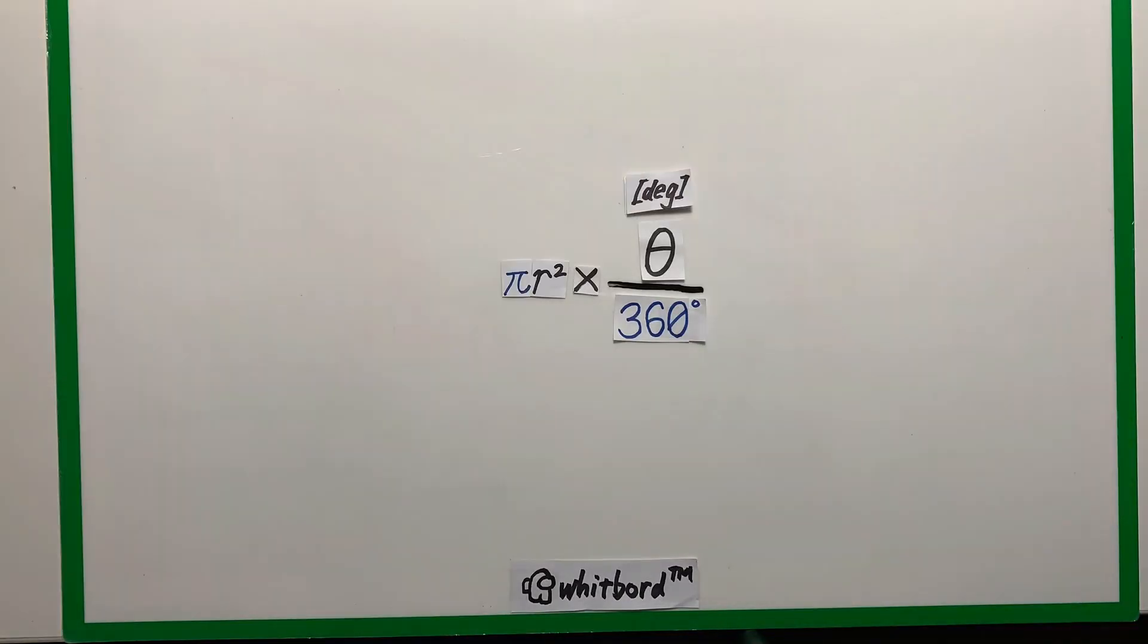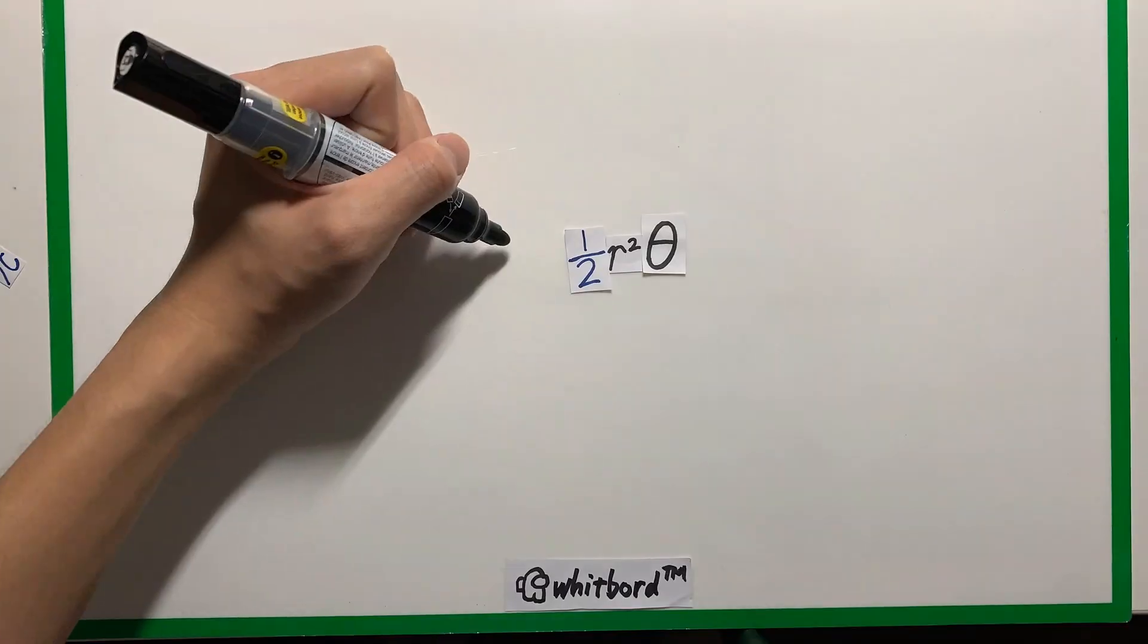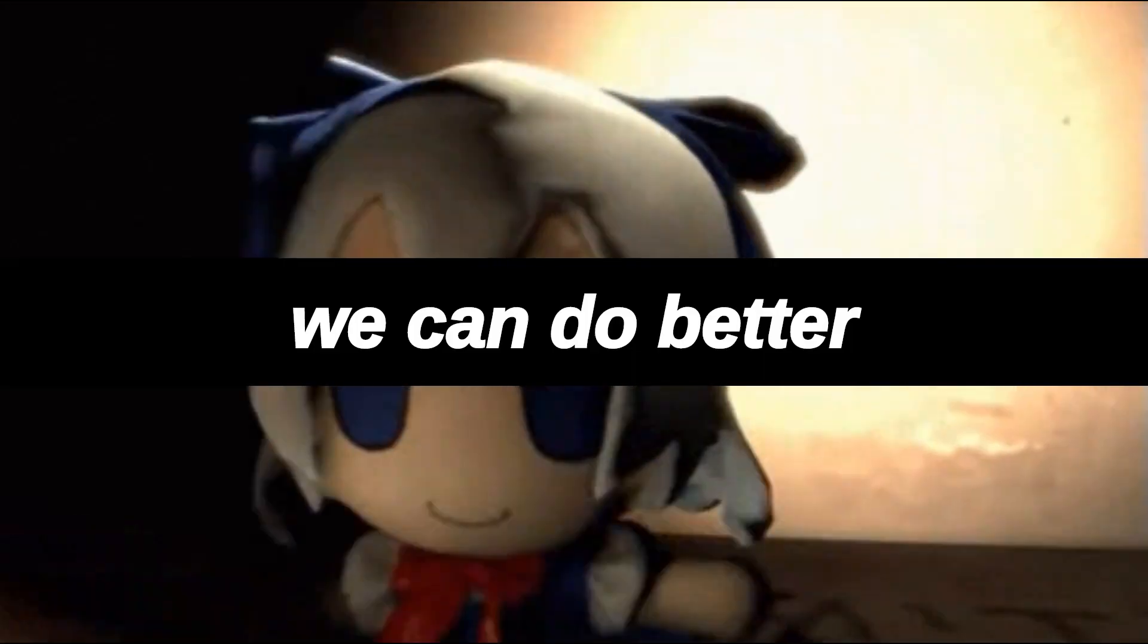The most straightforward method is just to convert the degree into the radian and proceed as usual. But this method is once again, quite painful. So we can do better.